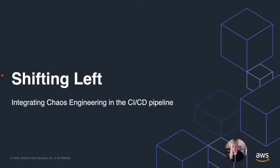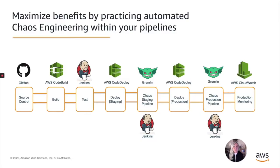Now let's chat about shifting left. I want to get into the demos and show you how you can integrate chaos engineering in your CICD pipeline. This is the demo environment we'll be using. The idea is to maximize benefits by practicing automated chaos engineering within your pipelines. We've got GitHub for source control, AWS CodeBuild to build our code, Jenkins for tests, and AWS CodeDeploy to deploy first to our staging environment. Then Gremlin is used with Jenkins to craft a chaos staging pipeline that runs a series of chaos engineering attacks — a gauntlet — before the code is deployed to production using AWS CodeDeploy.